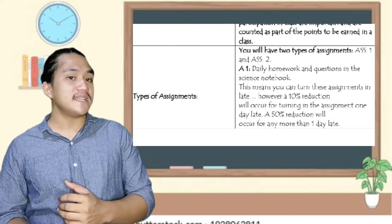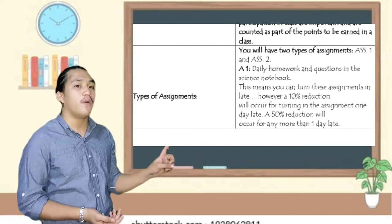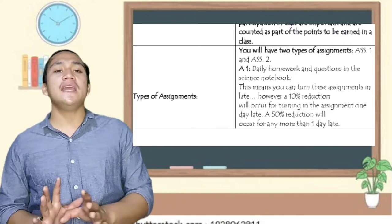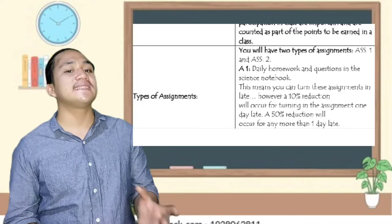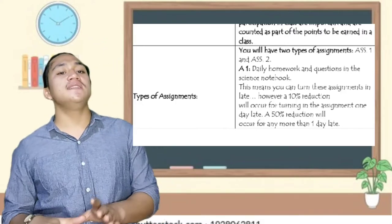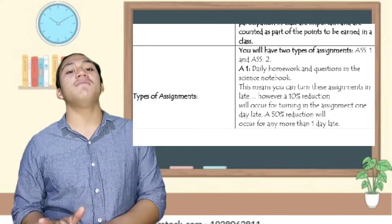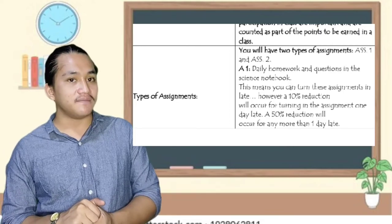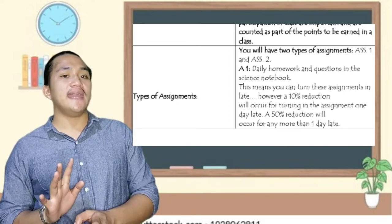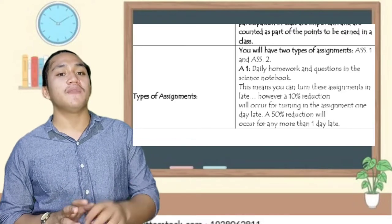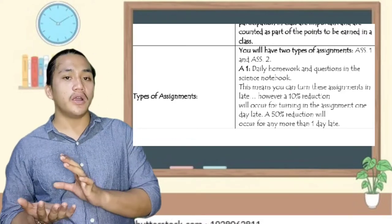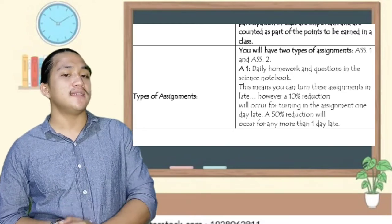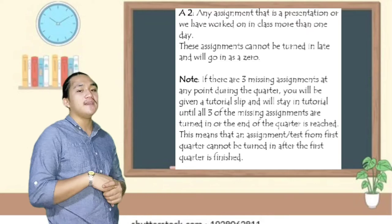First is assignment one, and second is assignment two. Assignment one is daily homework and questions in the science notebook. This means you can turn these assignments in late. However, a 10% reduction will occur for turning in the assignment one day late. A 50% reduction will occur for any more than one day late.